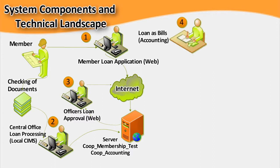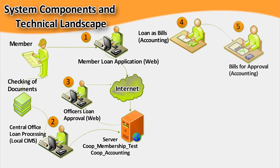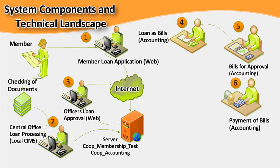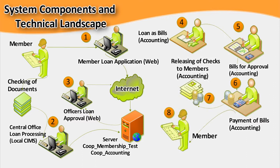The co-op approver accesses the SIMS website to approve the loans. After approval, the loan will be served as billing to the cooperative. The billing will be reviewed and approved by the Accounting Manager or Administrator. After review and approval, a notification will be sent to the member that their loan was approved.